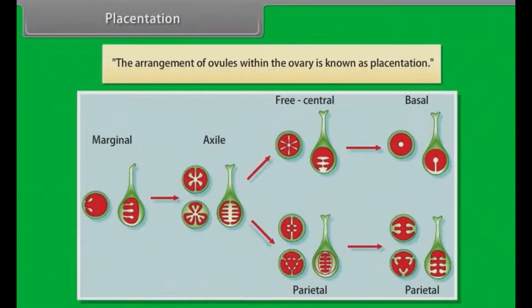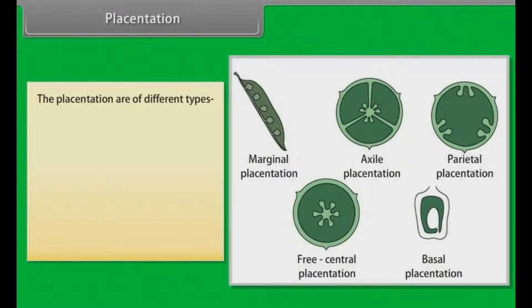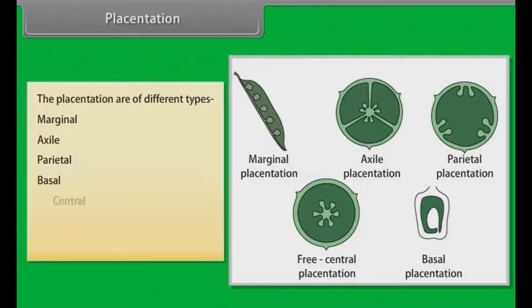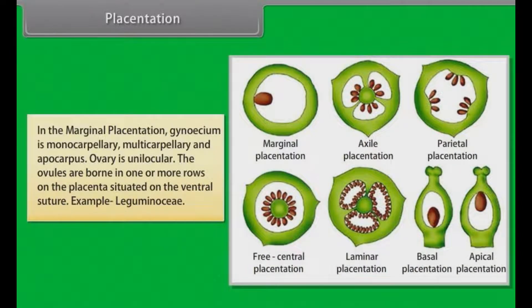Placentation. The arrangement of ovules within the ovary is known as placentation. The placentation types are: Marginal, Axile, Parietal, Basal, Central, Free Central and Superficial. In marginal placentation, gynoecium is monocarpellary, and the ovary is unilocular. The ovules are borne in one or more rows on the placenta situated on the ventral suture; example, Leguminosae.